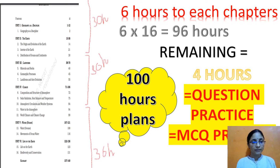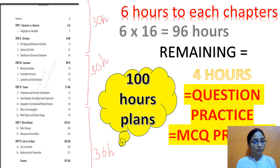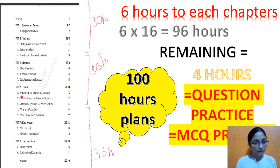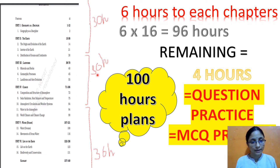There are 16 chapters and 6 units in all. In the first 30 hours, we are going to study chapters 1 to 5: geography as a discipline, origin and evolution of the earth, interior of the earth, distribution of oceans and continents, minerals and rocks, geomorphic processes and landforms and evolution, composition and structure of atmosphere, solar radiation, heat balance and temperature, and atmospheric circulation and weather systems. These two sets of 5 chapters will each take 30 hours.